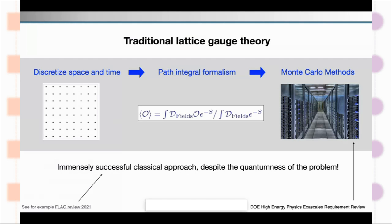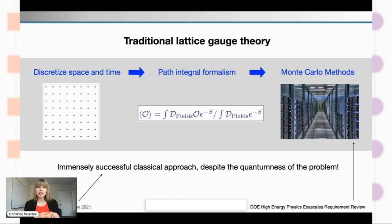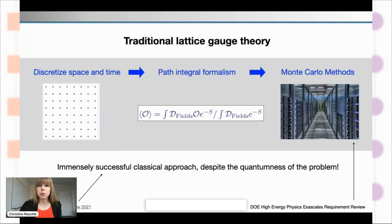Particle physics is already very well established, and traditional lattice gauge theory is an incredibly successful field. You use a very successful path integral formalism and then use huge classical supercomputers to run Monte Carlo methods — it's an immensely successful classical approach. You could even argue that given how quantum the problem is — describing how fundamental particles interact — it's even a bit surprising that this traditional approach is so successful.